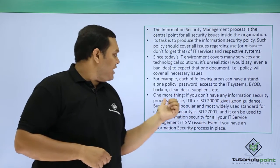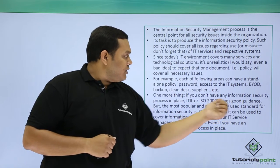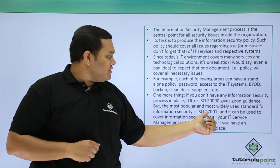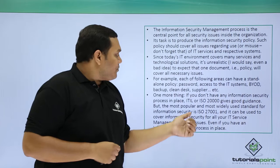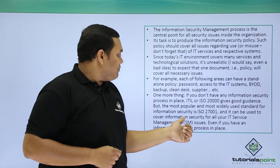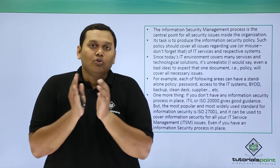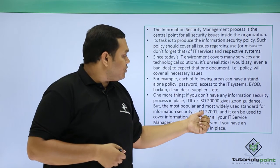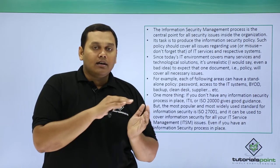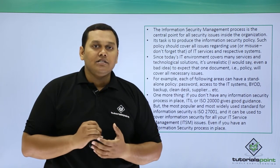If you do not have any information security implemented in place in your organization, ITIL or ISO 20000 gives good guidelines, but the most widely used standard is ISO 27001. This is the most popularly used ISO standard, and it can be used as your information security policy to cover all IT services issues. It is best to implement ISO 27001 so that it covers all the ISO standards guidelines and the information security is maintained in your organization, which is very helpful during an audit.